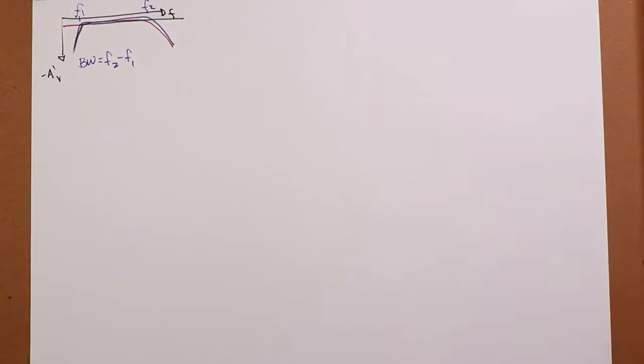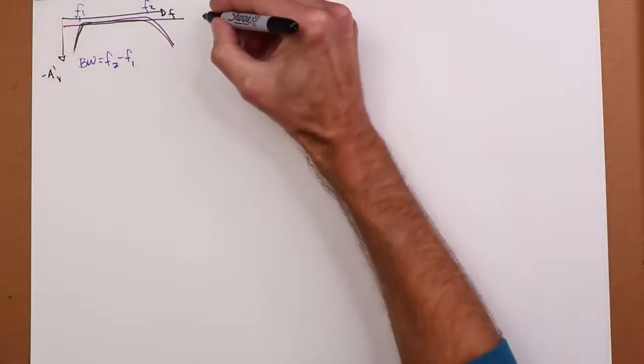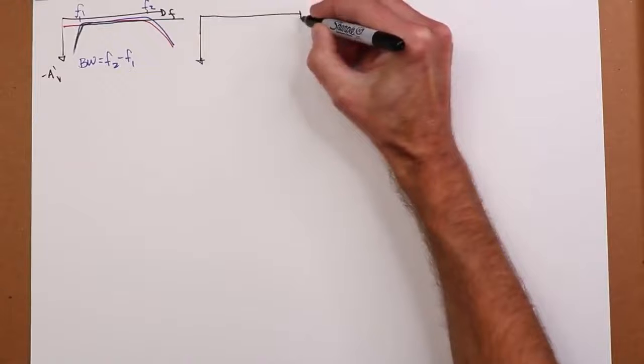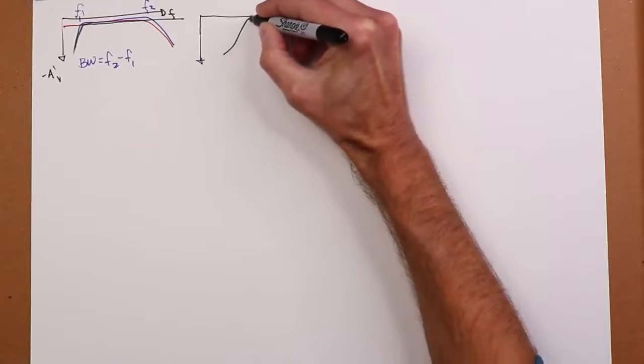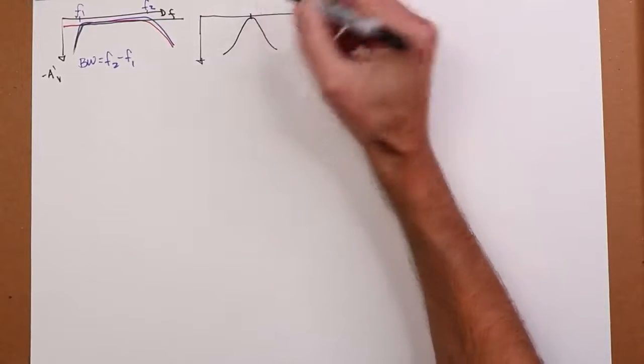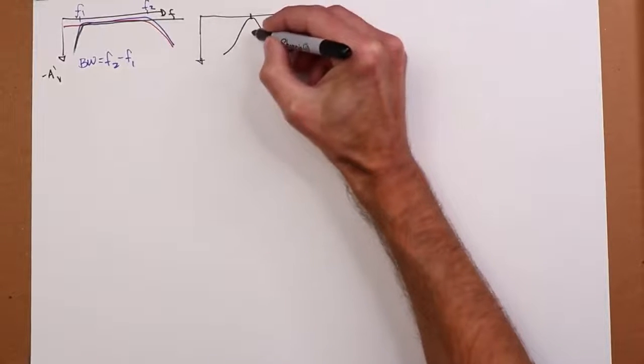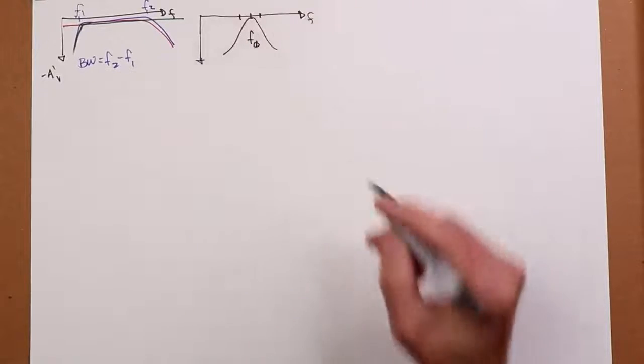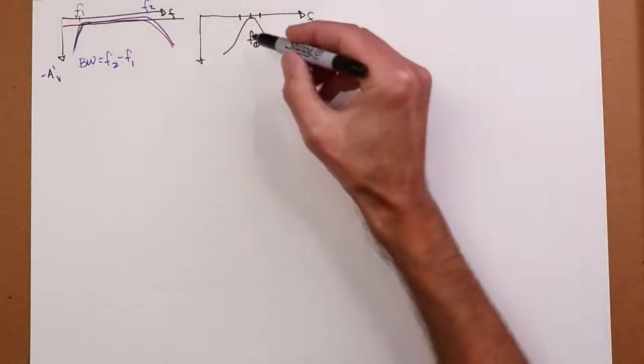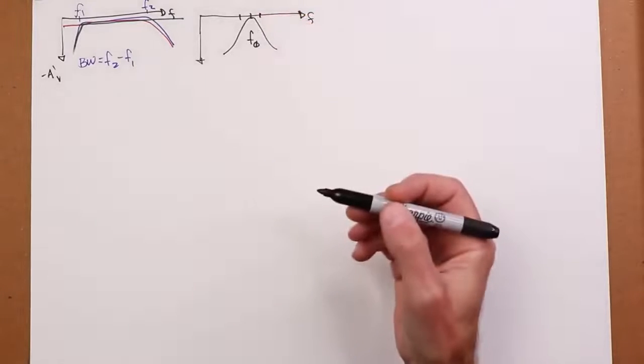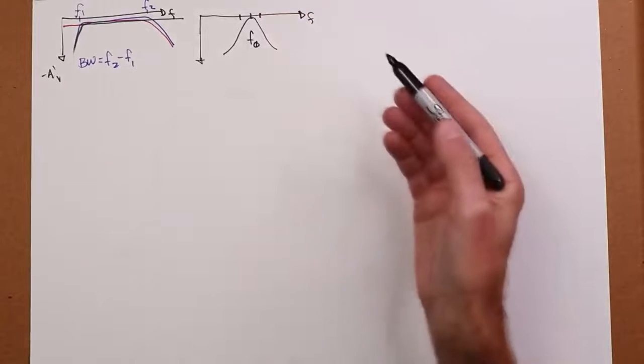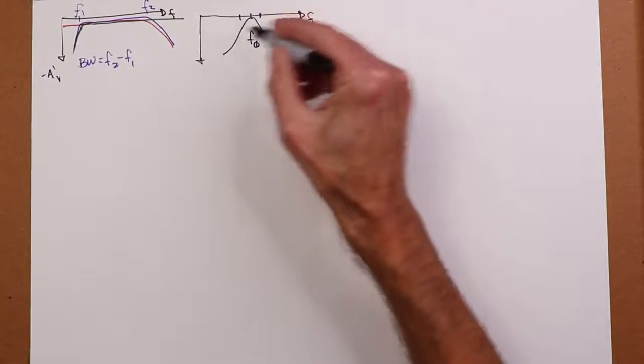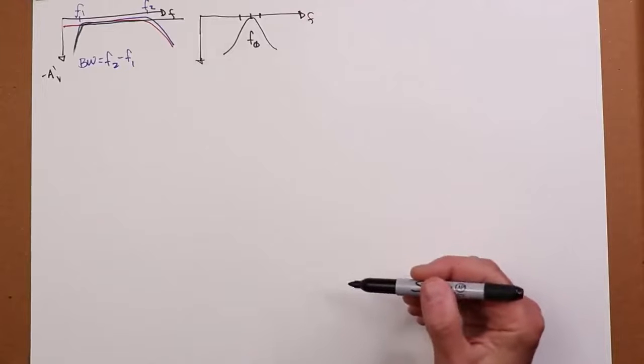But you might also have something in comparison that's notably tighter. In other words, you might have something like this. So here's your center frequency, f0. And your f1 and your f2 are close in there. For example, f0 might be a kilohertz, f1 might be 900 hertz, and then the f2 might be 1100 hertz. So that's 200 hertz bandwidth versus a center frequency of 1 kilohertz.